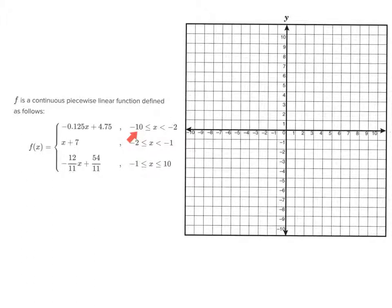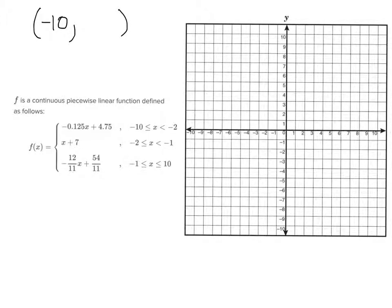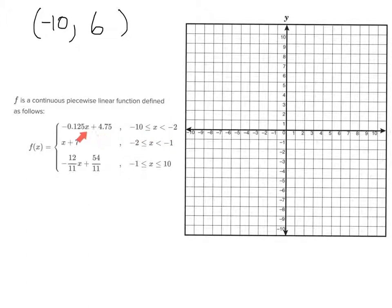What I need to do is plug negative 10 into the first function and negative 2 into that same function. When you plug negative 10 in for x, you get 6 out, giving the ordered pair negative 10, 6. Now we need to plug in negative 2, and that gives us the point negative 2, 5.